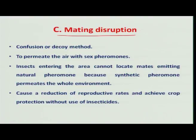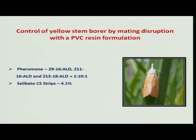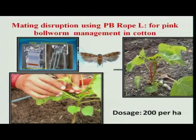Another way pheromones can be utilized in pest management is through mating disruption. This technique creates confusion among the same species — by utilizing synthesized pheromones you can permeate the whole environment so that the insect cannot identify the same species for mating, thereby it dies without mating. This was well studied and utilized in the case of paddy stem borer and also pink bollworm, where putting around 200 PVC rope dispensers per hectare can reduce the population of pink bollworm.